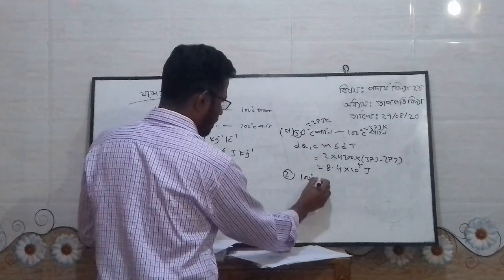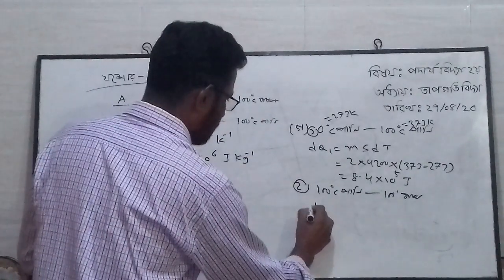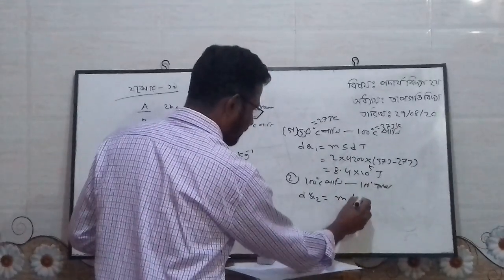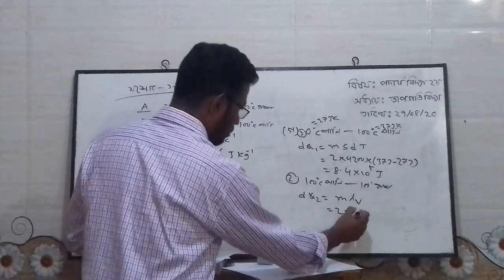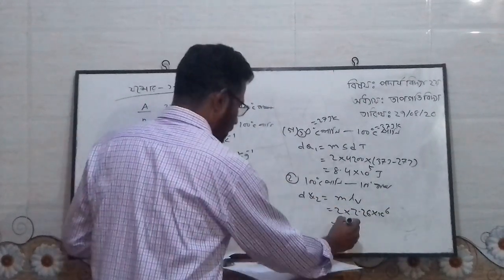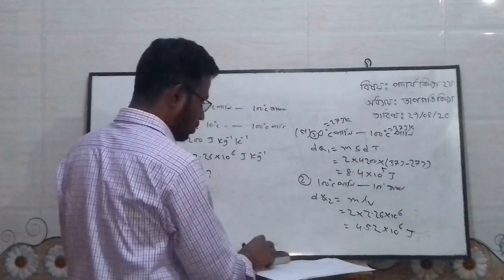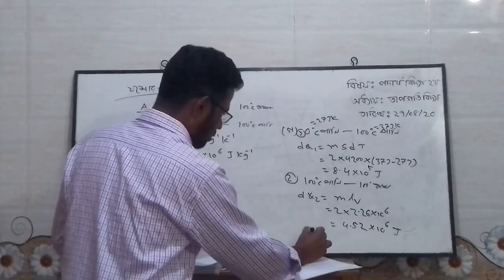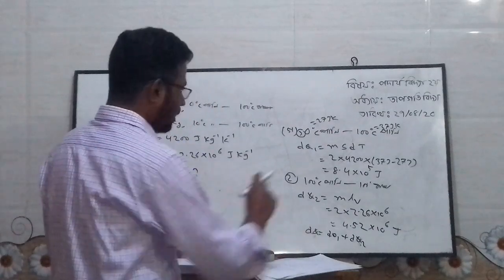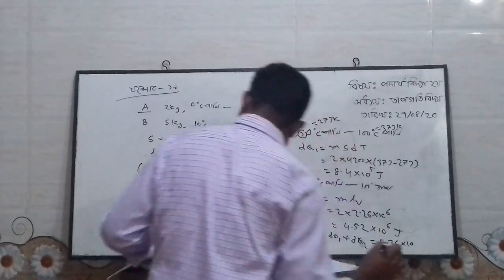This is the power supply which is set up to 100 degrees. Here we are looking for M and B. Number 2 is 2.26 × 10⁶, so 4.52 × 10⁶. More than dQ equal to dQ1 plus dQ2. This gives 5.36 × 10⁶² Joules.